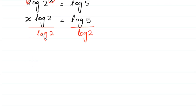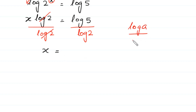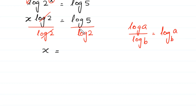Dividing both sides by log 2, the log 2 cancels on the left, giving x equals log 5 over log 2. Using the change-of-base property, log a over log b equals log base b of a, we write x equals log base 2 of 5. This is the final answer.